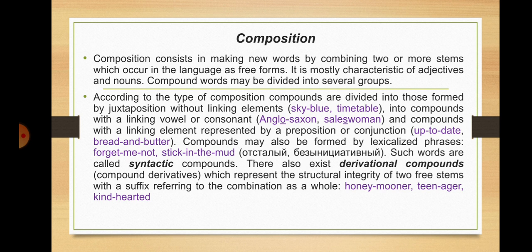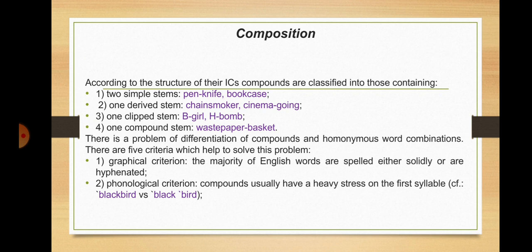There also exist derivational compounds, or compound derivatives, which represent the structural integrity of two free stems with a suffix referring to the combination as a whole: 'honeymooner', 'teenager', 'kind-hearted'. According to the structure of their immediate constituents, compounds are classified into those containing two simple stems (e.g., 'penknife', 'bookcase'), one derived stem ('chain-smoker', 'cinema-going'), one clipped stem ('big-ol', 'H-bomb'), and one compound stem ('wastepaper basket').